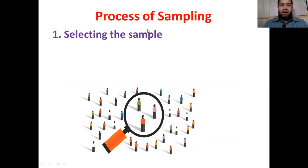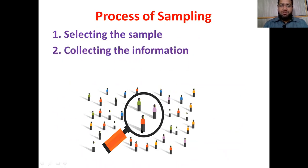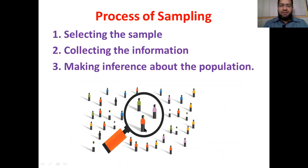How do we do this process of sampling? First, we randomly select the sample. Then we collect the information — we collect the data from this sample. Then we make inference about the whole population based on the data or information collected from the sample.